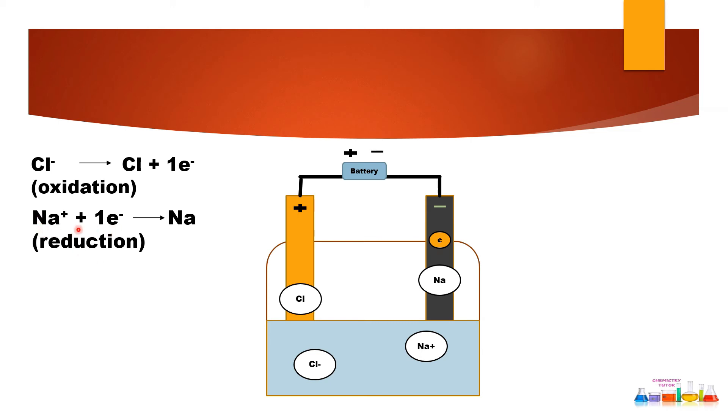Now if some students used to forget about at anode what is occurring, at cathode which process occurs, you can simply remember ANOX REDCAT. At anode oxidation will occur, at cathode reduction will occur.